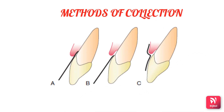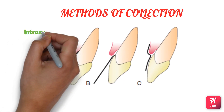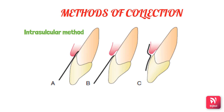Next, the methods of collection of gingival crevicular fluid. GCF is very scarce, making collection the most difficult hurdle. The intrasulcular method (picture A) places the filter paper strip into the sulcus. The extracrevicular method (pictures B and C) places the filter paper just at the entrance of the pocket or over the pocket entrance.